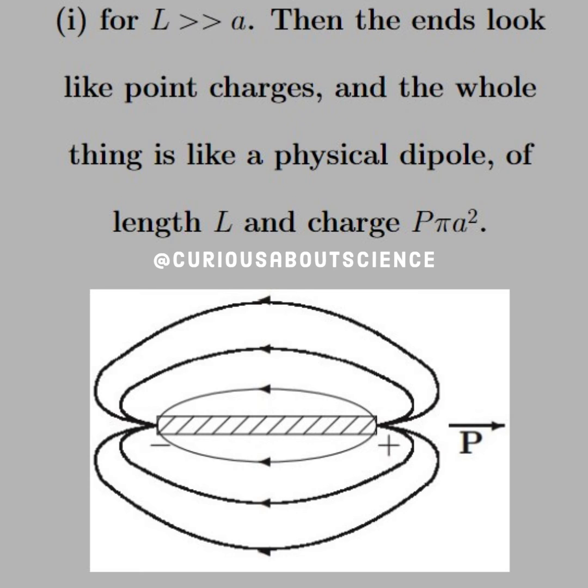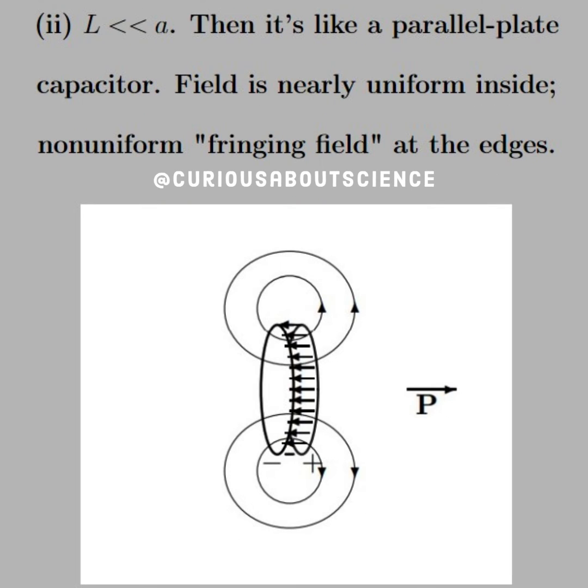For case two, where L is much, much less than A, then it looks like a parallel plate capacitor, a circular one. The field inside looks pretty uniform, as you can see by the tightly compact arrows in the diagram.